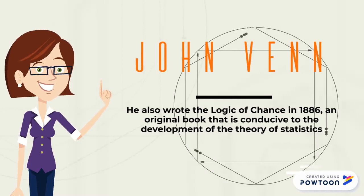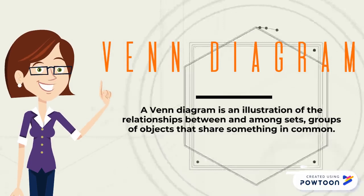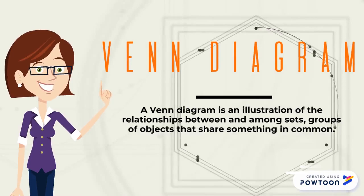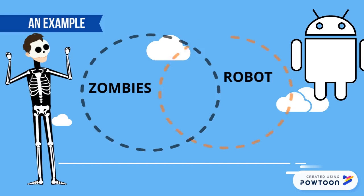A Venn Diagram is an illustration of the relationships between and amongst groups of objects that share something in common. An example is a diagram between a robot and a zombie. Both are different, but they have one thing in common: no emotions, situated on the intersection between the two circles.